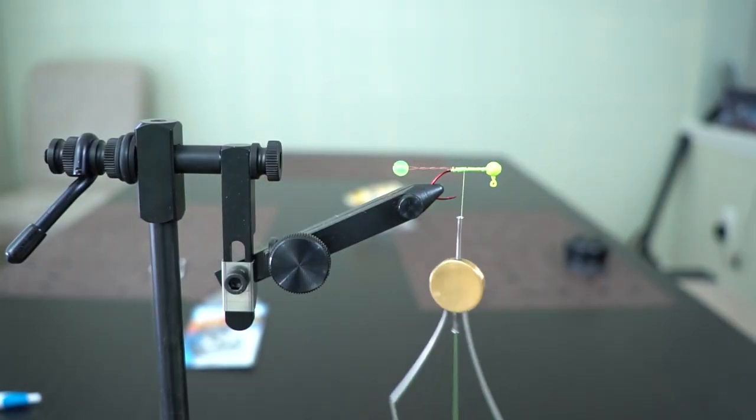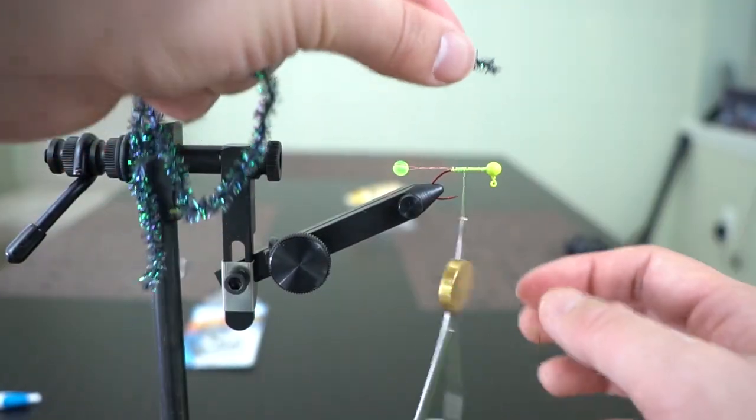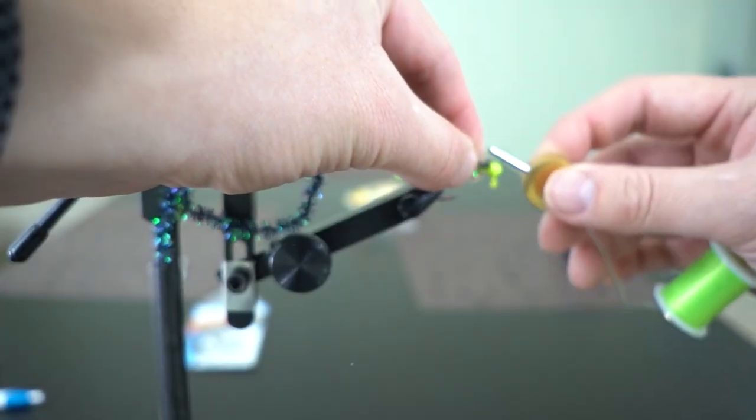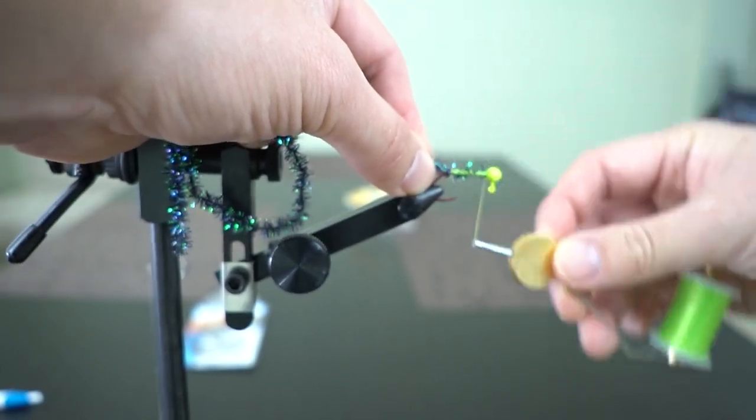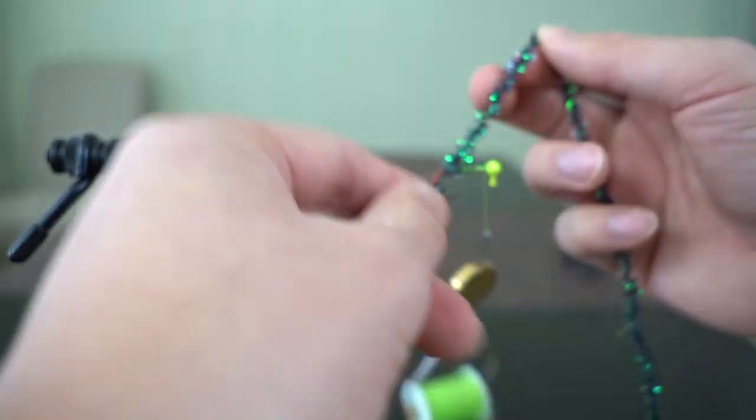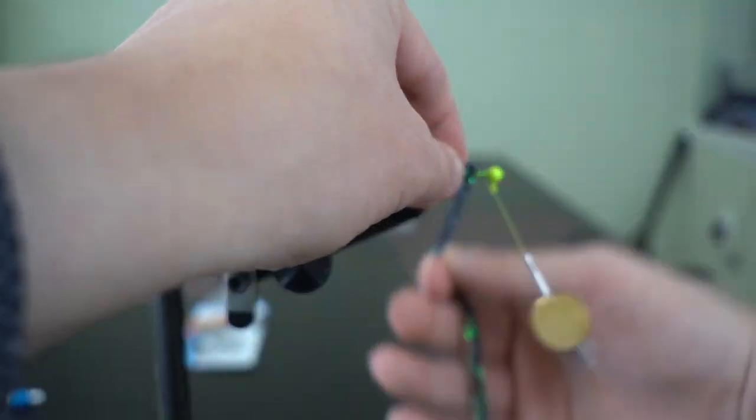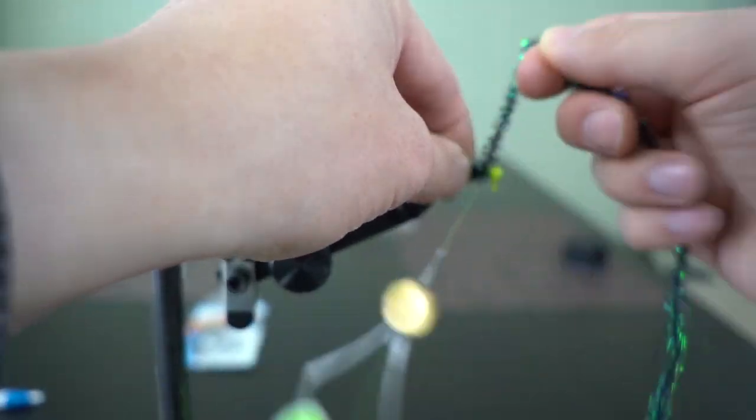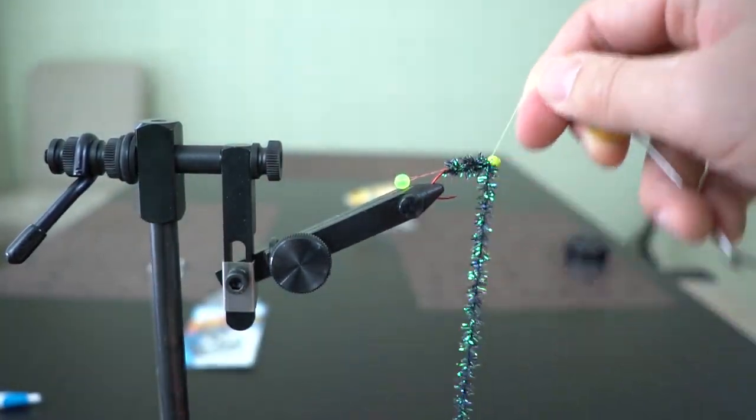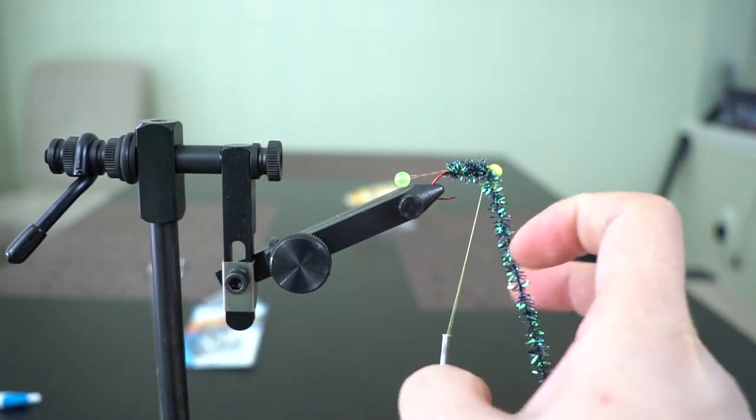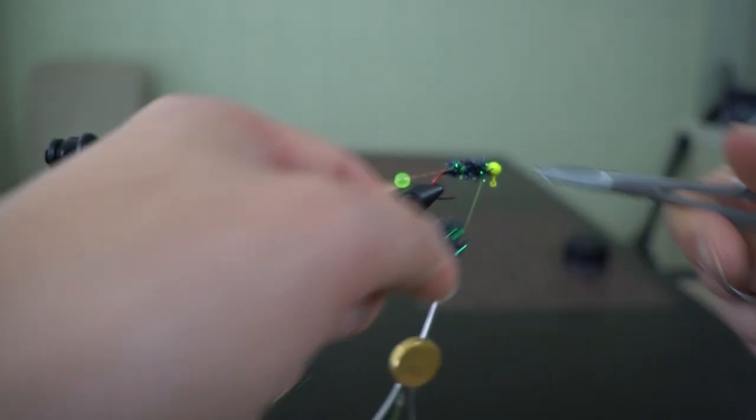There you go. Now, I'm going to choose a contrasting, but still having some green accent chenille here. And I'm going to start from the front because I want a kind of big body. Wrap around a couple of times of the chenille, then wrap it around the head. Trim the chenille.